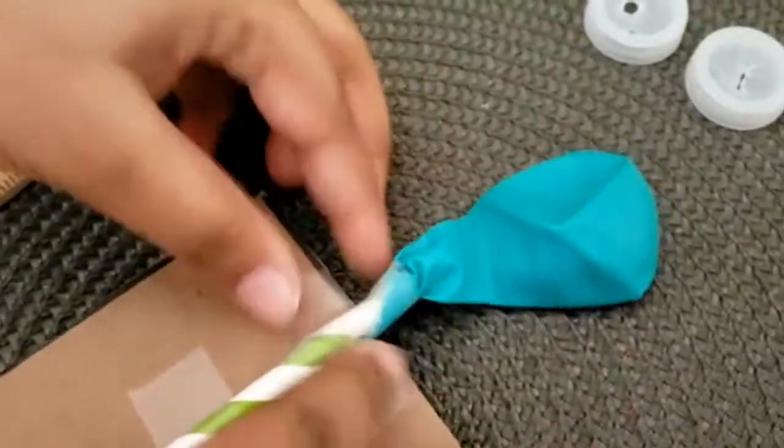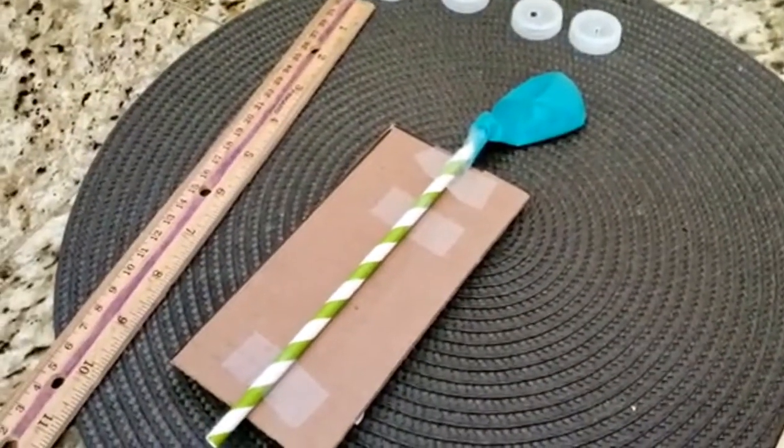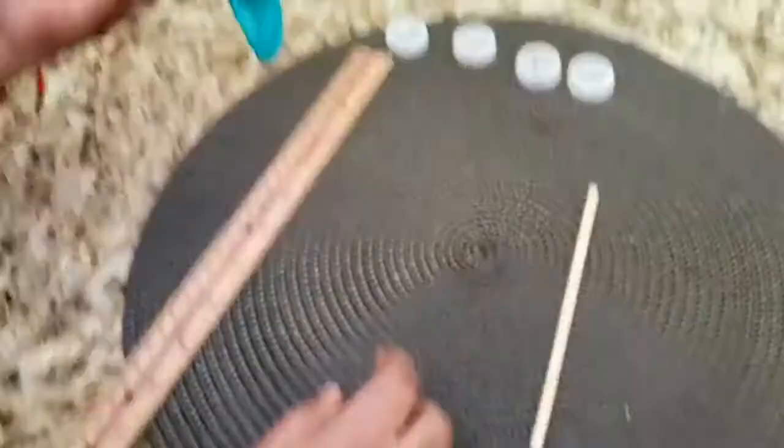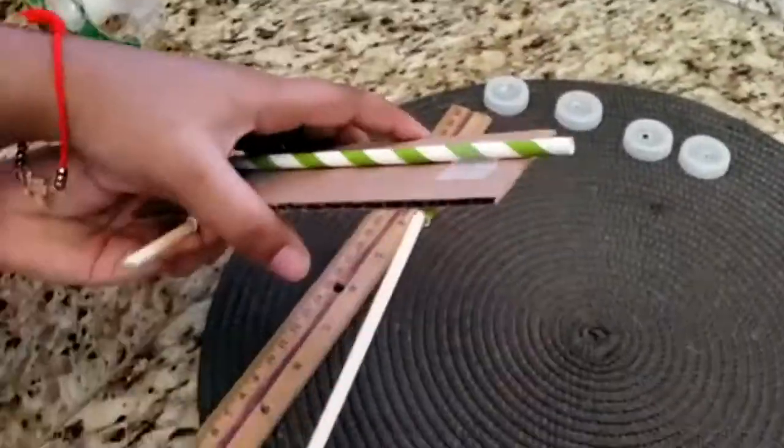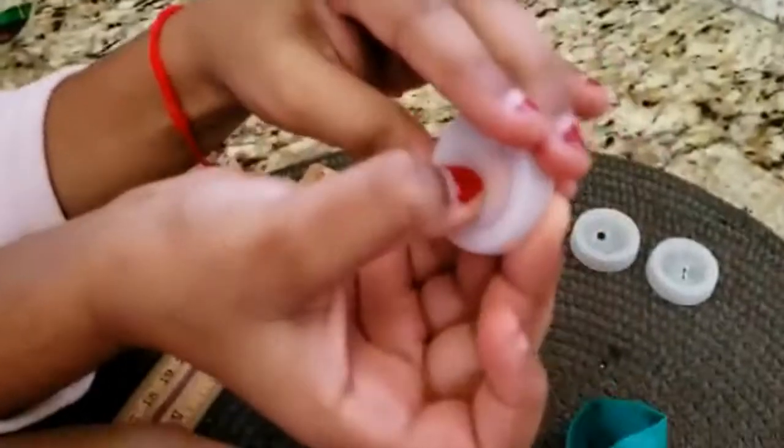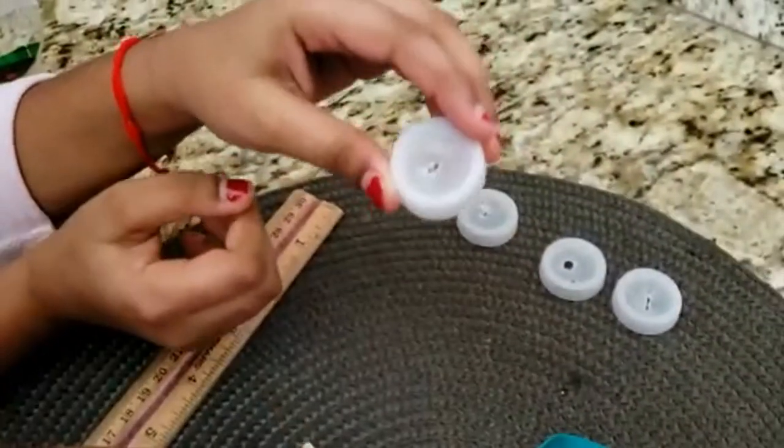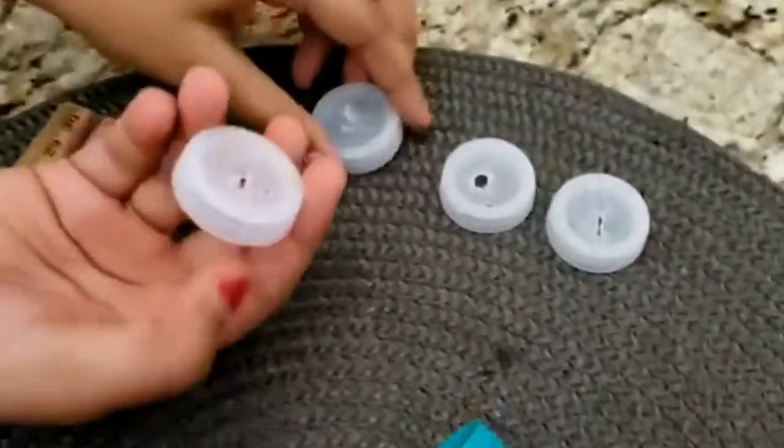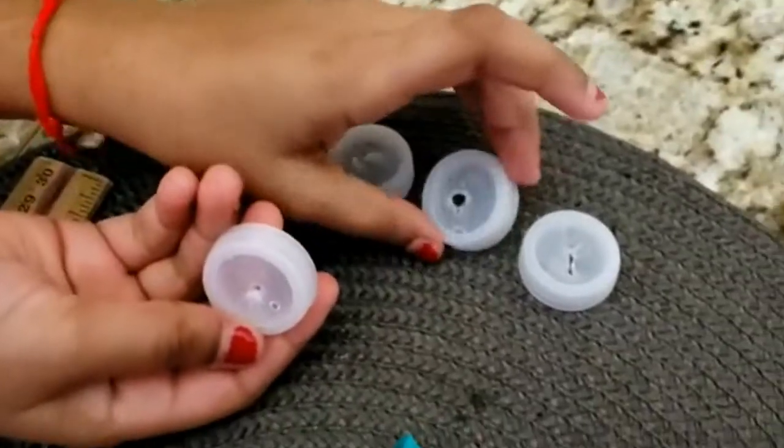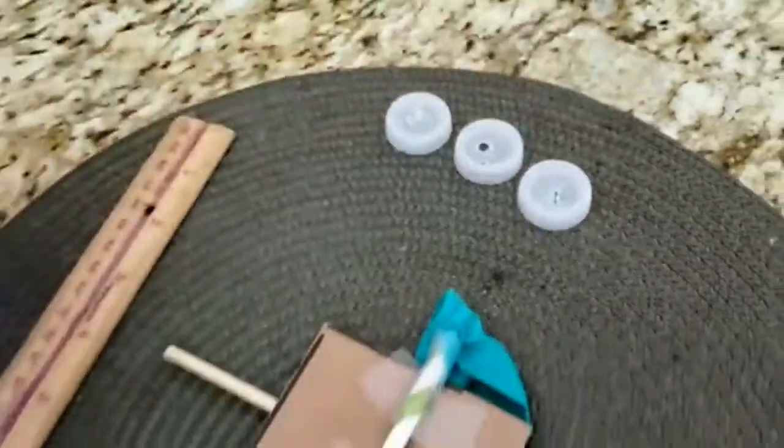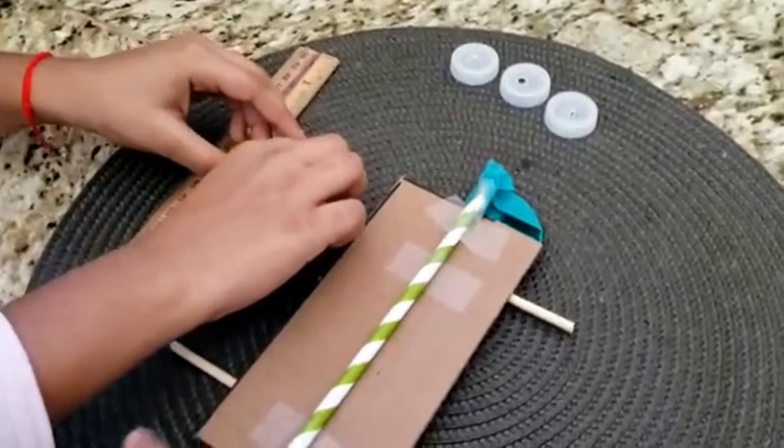Slide the skewers through the two parallel straws. These are the axles. Drill holes in four water bottle caps. That's what we've done. We gotta poke these through.